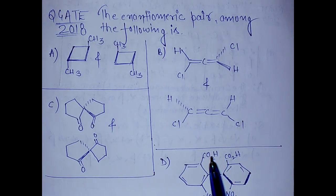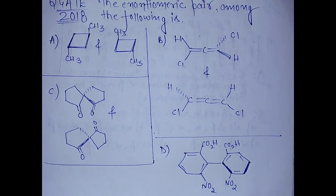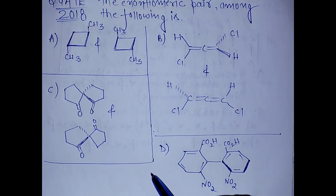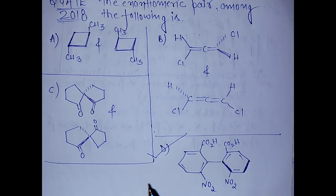Hello everyone. Most of you were requesting me to take this question. Before the GATE examination, I uploaded a video on how to calculate the RS configuration of allene, biphenyl, and spiro compounds, and this was a very direct question from that video. You just have to calculate the RS configuration and you are good to go. The answer was D, so if you watched that video and didn't attempt this question or got it wrong, that is very disappointing.